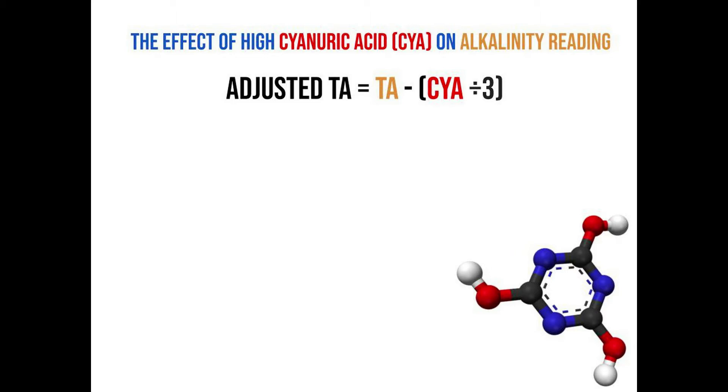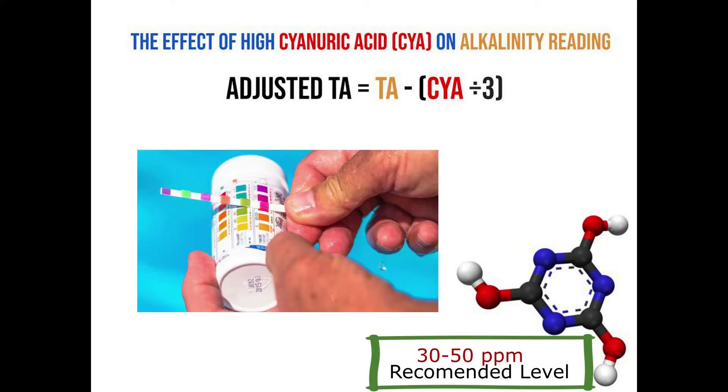So when you test on your test kit a high cyanuric acid, we're talking about higher than 50 parts per million, because remember that recommended level of cyanuric acid is 30 to 50 ppm. So when that ppm concentration that you test on your test kit for cyanuric acid is above 50 ppm, it will affect your alkalinity.